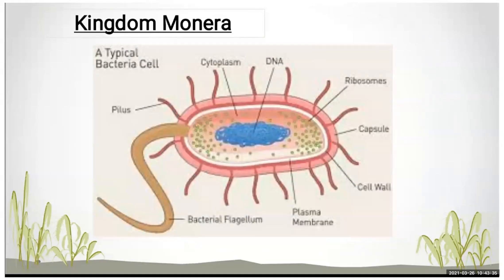Now we will see the introduction of Kingdom Monera. Monera means single — it is a unicellular organism having a prokaryotic cell. Its example is bacteria. In this, there is no other cell organelle; in the picture you can see cytoplasm, nucleus DNA, ribosome, capsule, cell wall, plasma membrane, and a bacterial flagellum. Kingdom Monera includes bacteria and the word Monera means single.